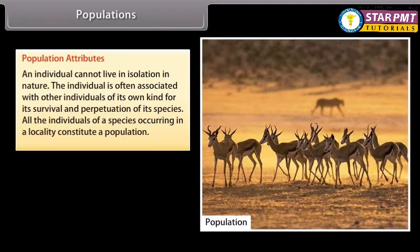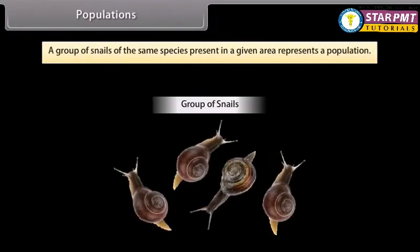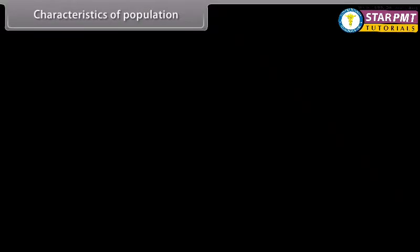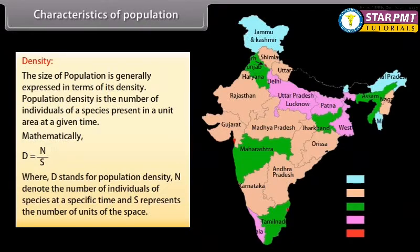An individual cannot live in isolation in nature; it is often associated with other individuals of its own kind for survival and perpetuation of its species. All the individuals of a species occurring in a locality constitute a population. In ecology, a population is a group of individuals of the same species inhabiting the same area and functioning as a unit of biological community. The size of a population is expressed in terms of its density — population density is the number of individuals of a species present in a unit area at a given time. Mathematically, D = N/S, where D is population density, N is the number of individuals, and S is the number of units of space.